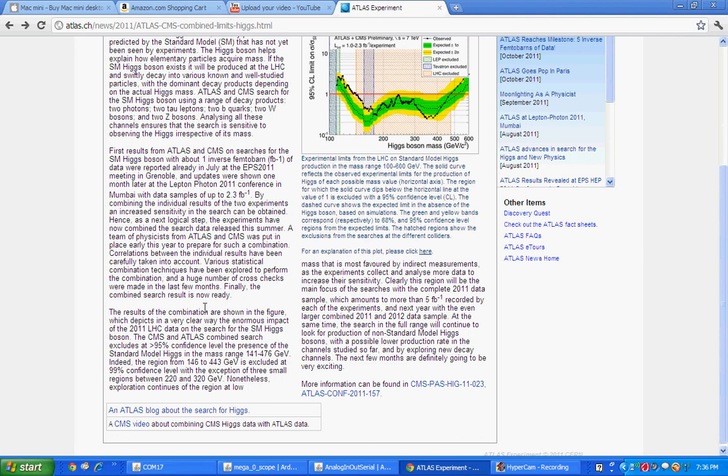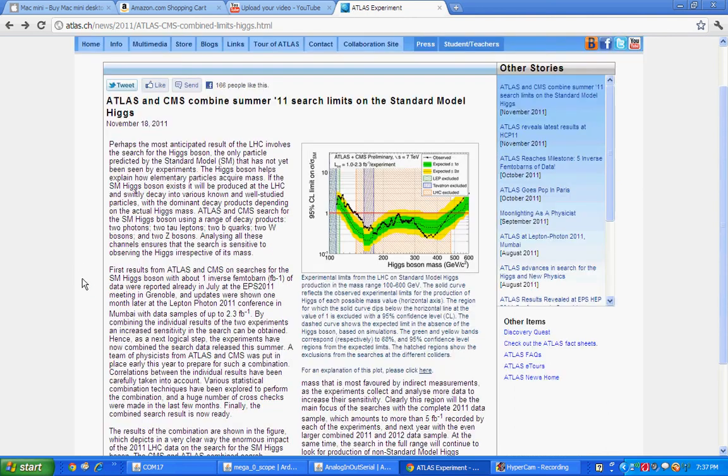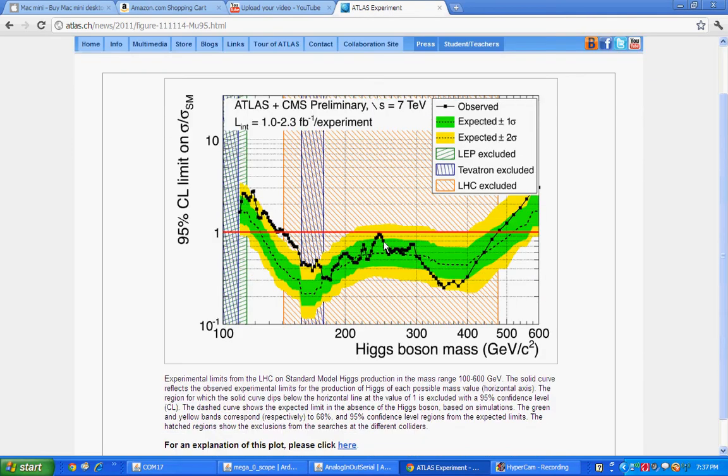let me get the exact values, 141 giga electron volts and 476 giga electron volts. That means that from 141 to 476 there is a 95% confidence level that the Higgs boson does not exist at those masses, meaning that the Higgs boson is somewhere in here.